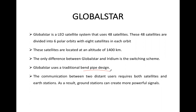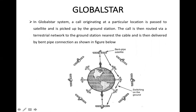From this diagram you can observe the mode of communication in GlobalSTAR. Let's assume this is user number one and this is user number two, and user number one wants to make a call to user number two. First of all, the call will be picked by the satellite — specifically, the satellite within the footprint of the beam.